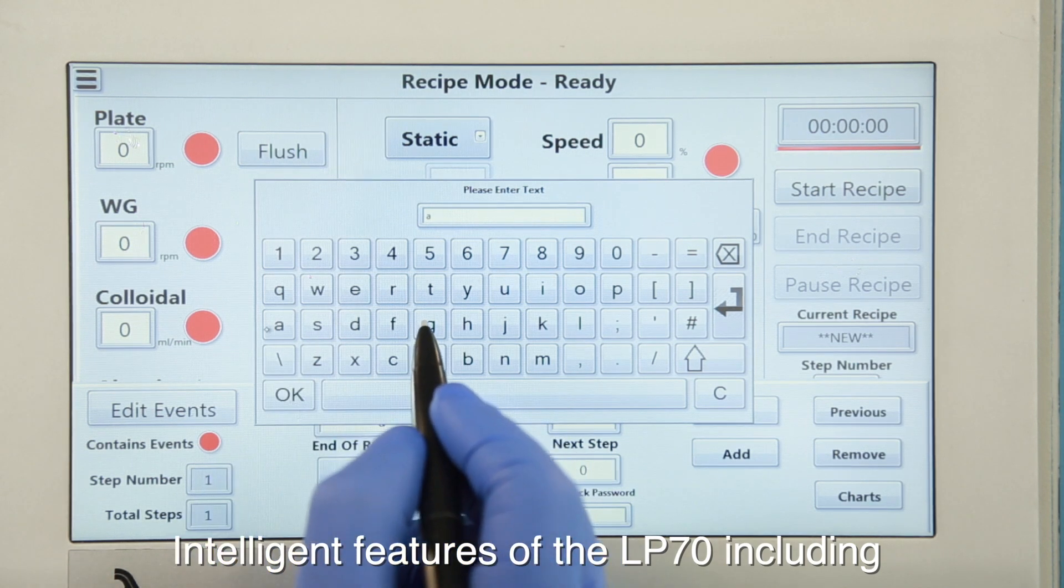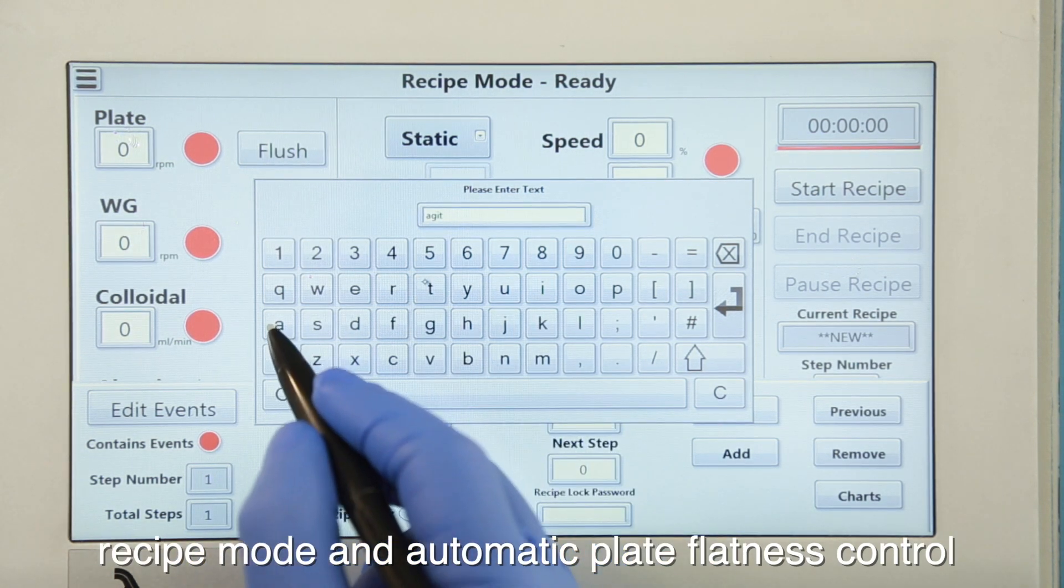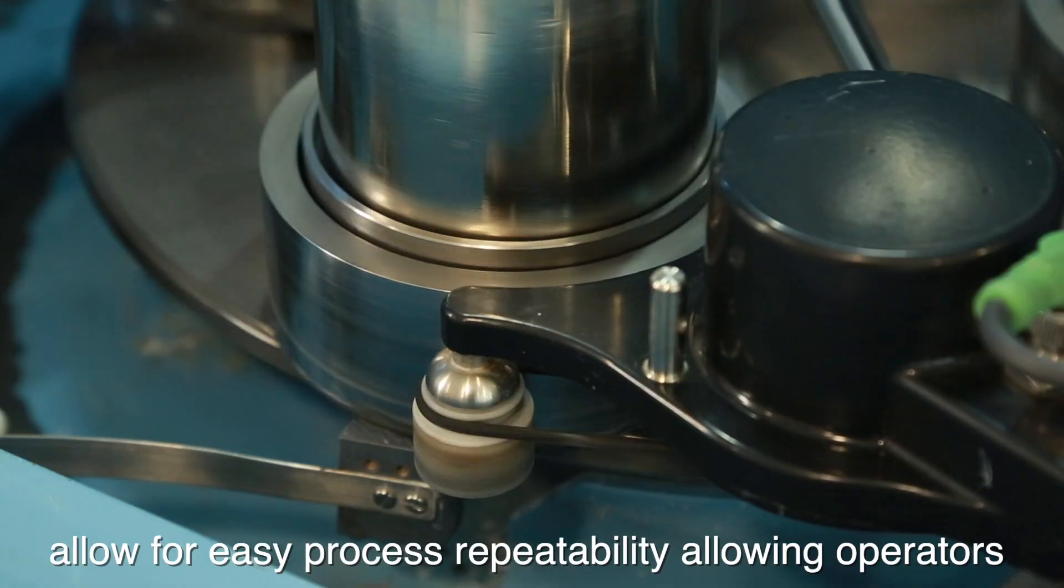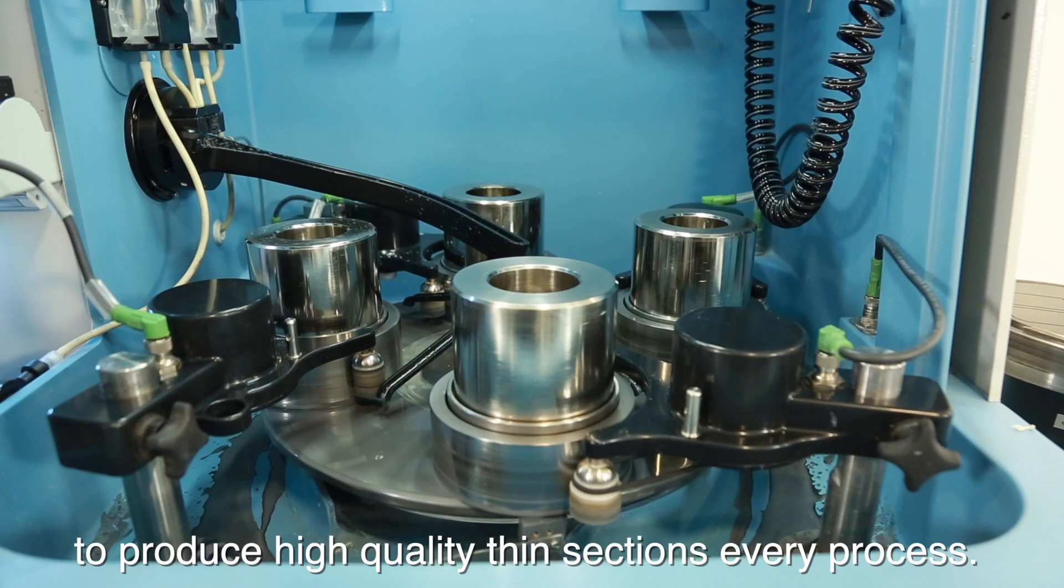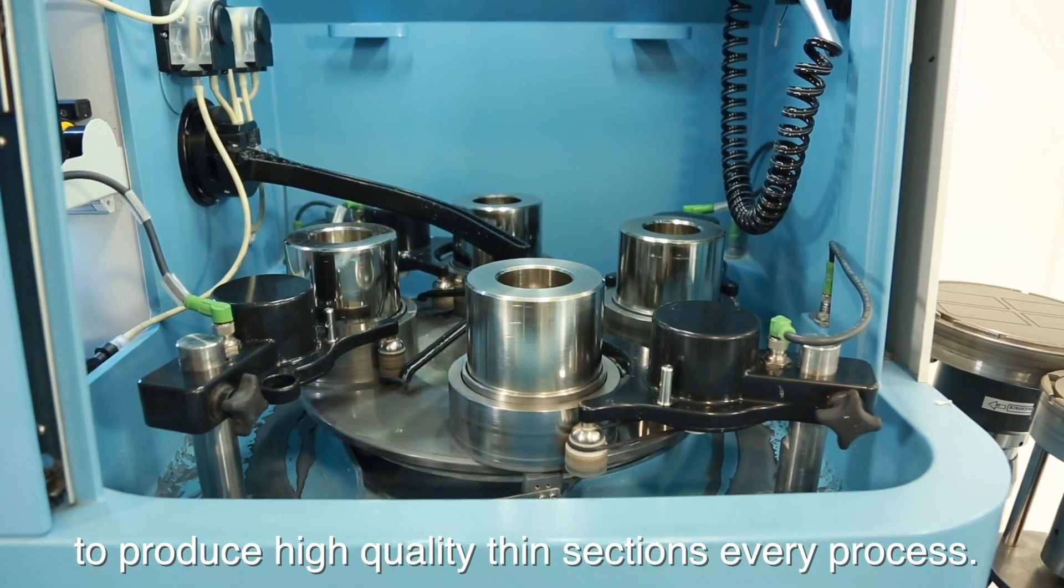Intelligent features of the LP70 including recipe mode and automatic plate flatness control allow for easy process repeatability, allowing operators to produce high quality thin sections every process.